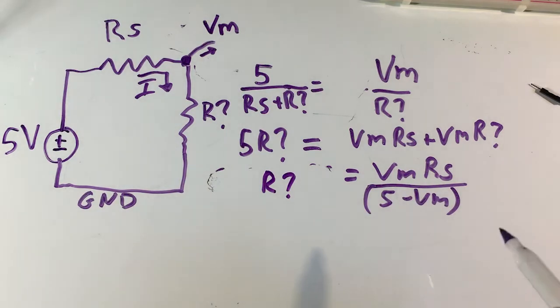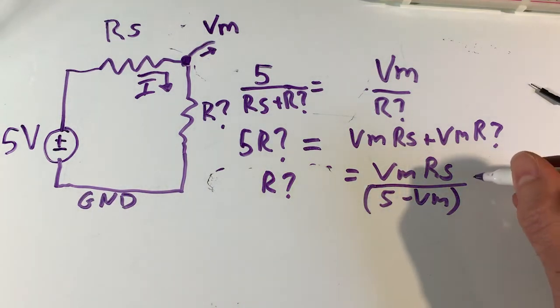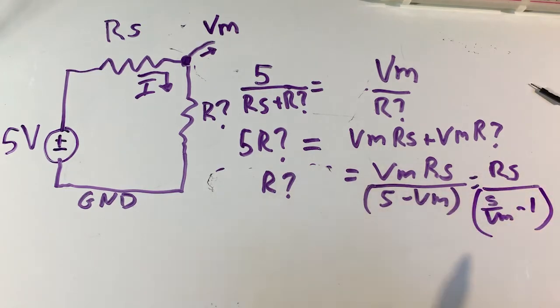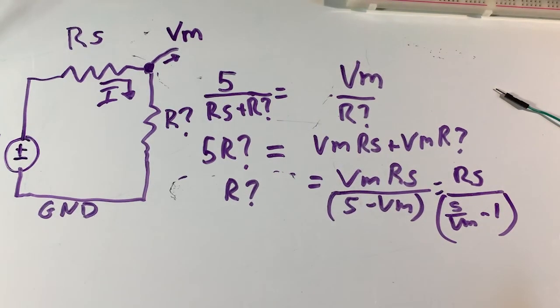And so we solved for it. We could make this a little simpler if we wanted to. We'd just divide everything by VM both the numerator and the denominator and we'd have RS divided by 5 over VM minus 1. And this right here is the equation that the Arduino multimeter, the Z meter, uses to calculate the unknown resistance.